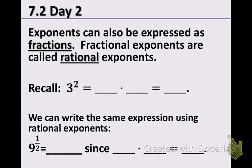So exponents can also be expressed as fractions, and fractional exponents are called rational exponents because remember a ratio is the comparison or fraction of two numbers. Recall from the past, 3 squared just means 3 times 3. That 2 tells us how many times we are multiplying 3 by itself, and we get 9.